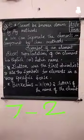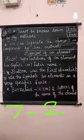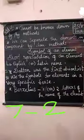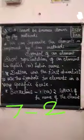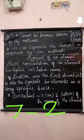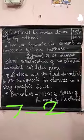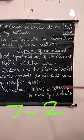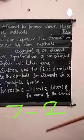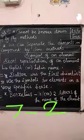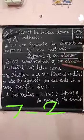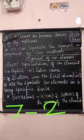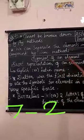The next topic is the symbol of an element. A symbol is the short representation of an element. For example, hydrogen is written as capital H, and carbon is written as capital C. So in chemistry, capital C means carbon and capital H means hydrogen.